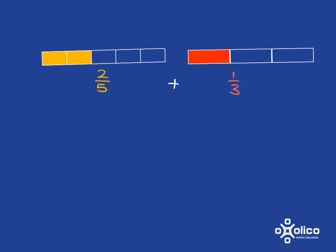So I need to rewrite two-fifths and one-third so they both have the same denominator, so I'm talking about the same size pieces that I can add.